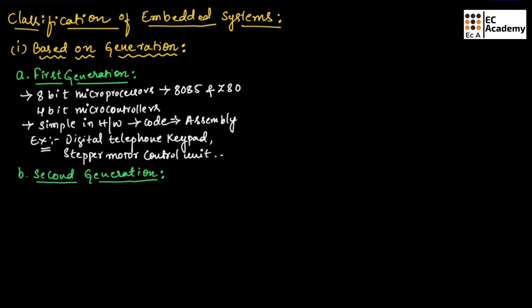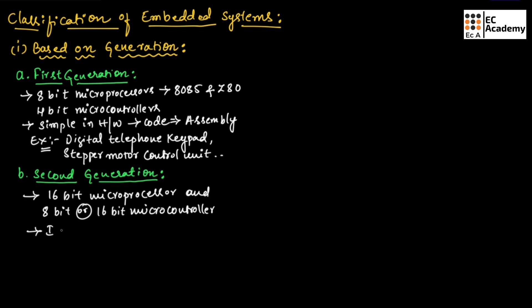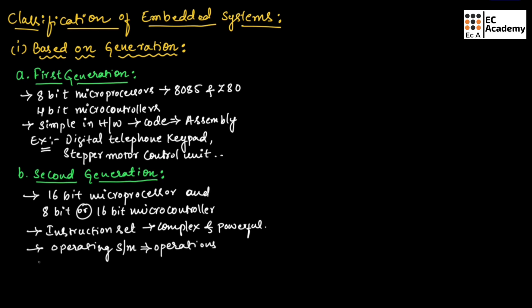Now let us understand the second generation. These embedded systems were designed using 16-bit microprocessors and 8-bit or 16-bit microcontrollers. The instruction set is much more complex compared to the previous generation and they are much more powerful. Some of the embedded systems also consist of an operating system for their operation. Examples of second generation are data acquisition systems and SCADA systems.